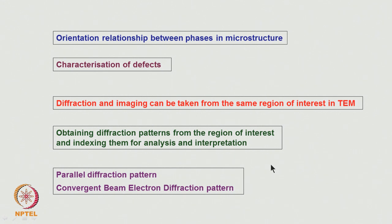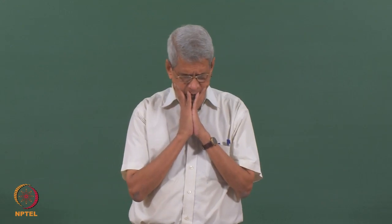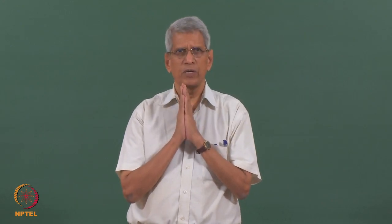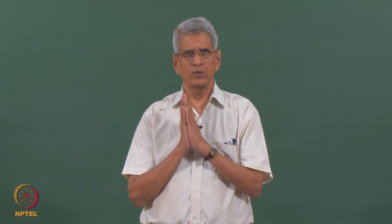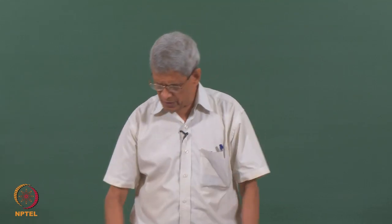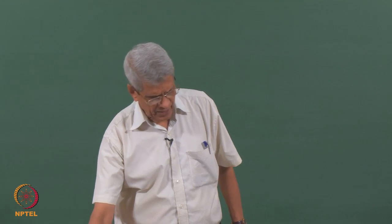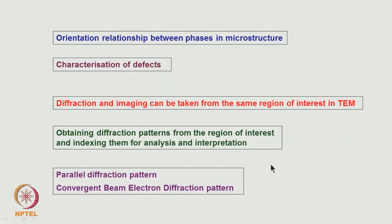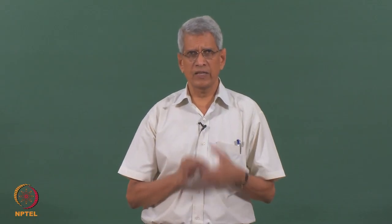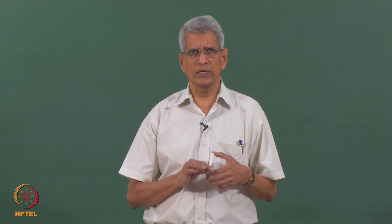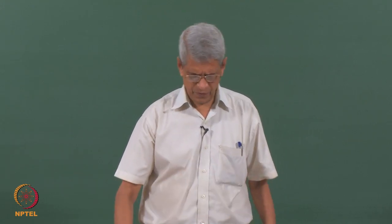We can use the microscope in both imaging and diffraction mode. In diffraction mode, we can use it in parallel diffraction — what we call selected area diffraction mode — and also in convergent beam electron diffraction (CBED). CBED can be used to get information not only about crystal structures and accurate lattice parameters, but also about space group and point group symmetry.